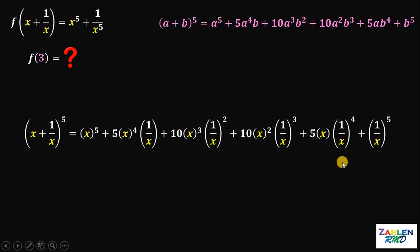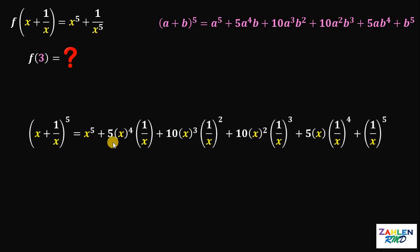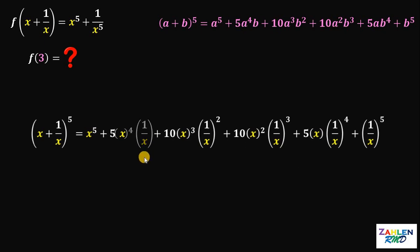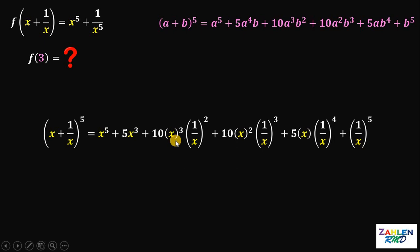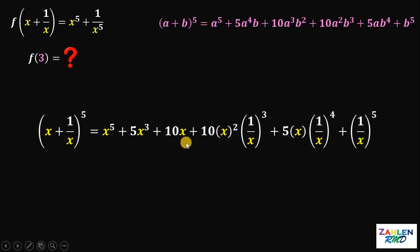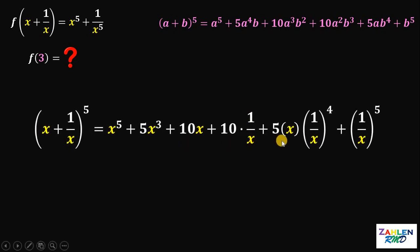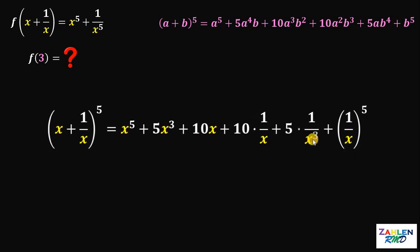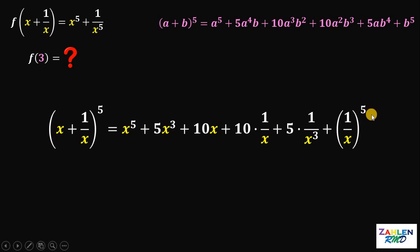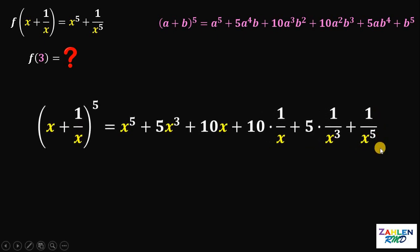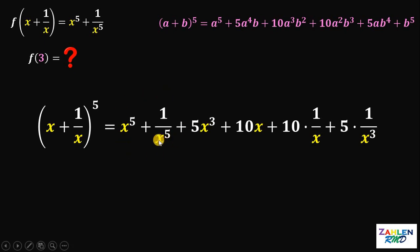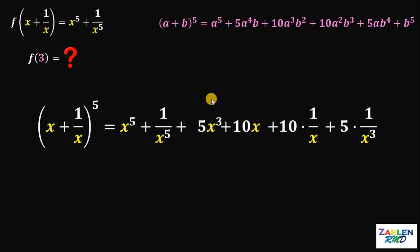Now let's simplify the right-hand side. x^5 is just x^5. 5x^4 times (1/x) is just 5x^3. 10 times x^3 times (1/x)^2 is just 10x. 10 times x^2 times (1/x)^3 is just 10/x. That term is just 5/x^3. And (1/x)^5 is just 1/x^5. Now let's rearrange some terms, grouping x^5 + 1/x^5 on one side.